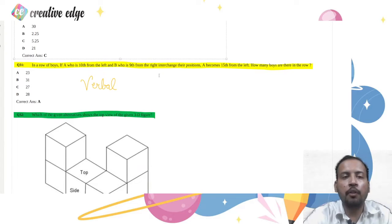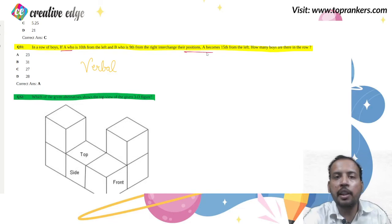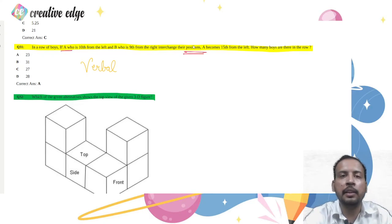Now this is one of the questions from verbal reasoning. The question reads, in a row of boys, if A who is 10th from the left and B who is 9th from the right interchange their position. This is again a question from verbal reasoning part.